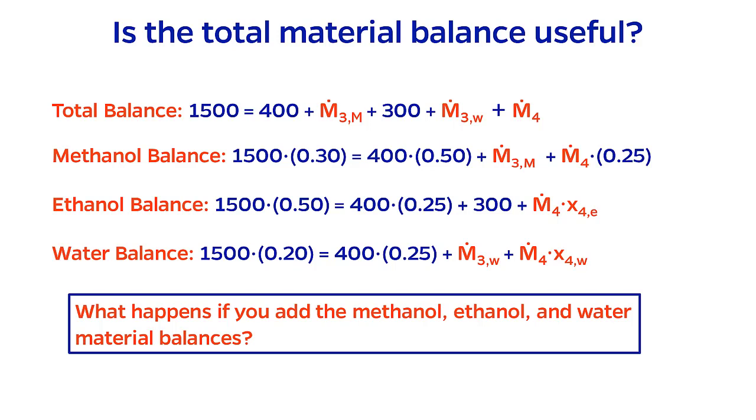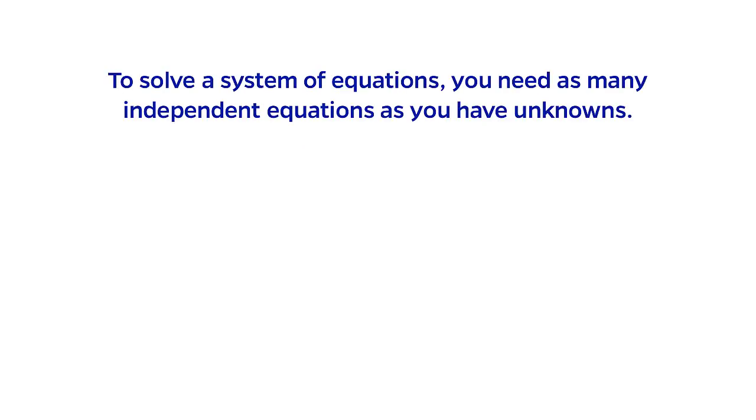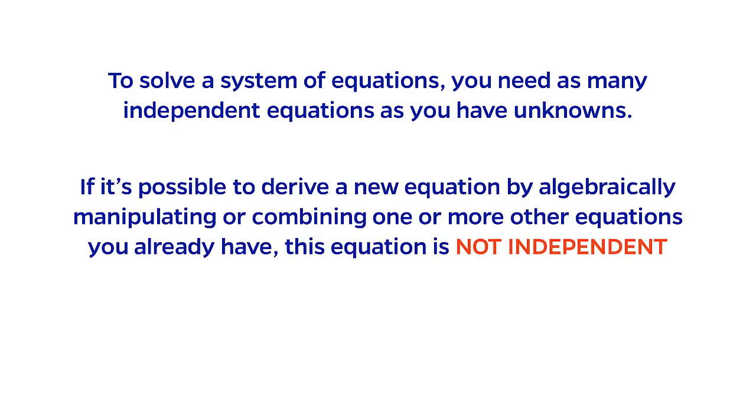But what does this all mean? Let's qualify the requirement from earlier by saying that the equations that we need to solve a system of linear algebraic equations must be independent from one another, meaning fundamentally different. So if it is possible to derive a new equation by algebraically manipulating or combining one or more other equations that you already have, then the new equation is not independent.